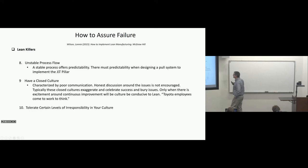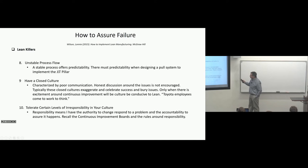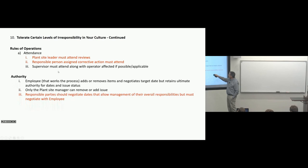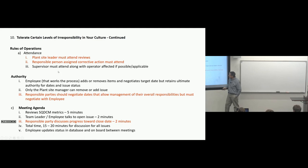Tolerate certain levels of irresponsibility within your culture. Responsibility means I have the authority to change, respond to a problem, and the accountability to assure it happens. Recall the continuous improvement boards and rules around responsibility. This is what I say. Bob was a genius. Plant site leader must attend. Responsible person assigned corrective actions must attend. Responsible parties should negotiate dates that allow management of their overall responsibilities, but must negotiate with the employee. Responsible party discusses progress toward close date, two minutes. And remember Erwin Raphael talking about the reason that he was successful at Hyundai is because of this. Responsible people must be responsible. And this is what Lonnie Wilson is saying. Don't allow irresponsibility to thrive. There you go.